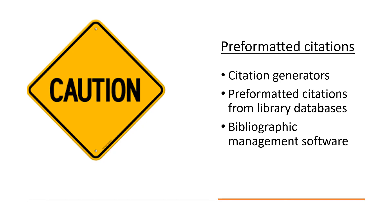Many students rely on pre-formatted citations available within library databases, citation generators such as EasyBib and Citation Machine, as well as bibliographic citation management programs like EndNote and Zotero. If you use these programs, make sure you check your reference list against the APA Style Guide website or the Purdue OWL.